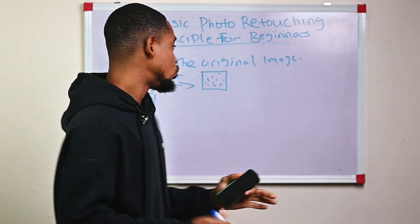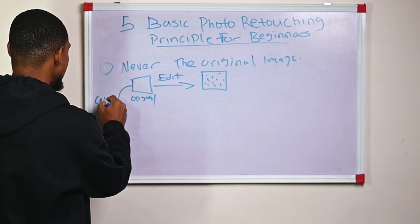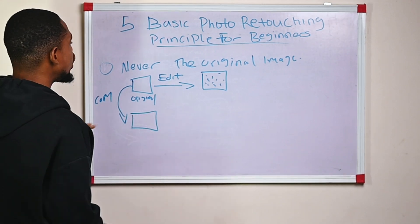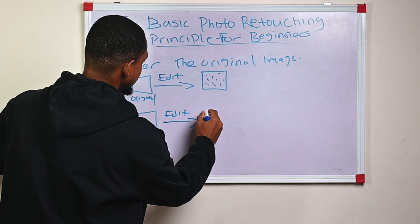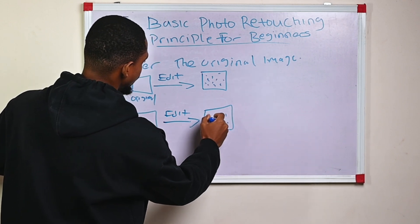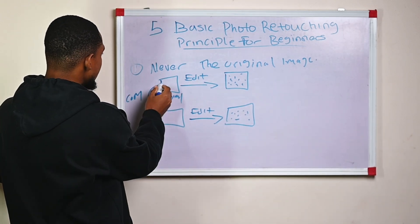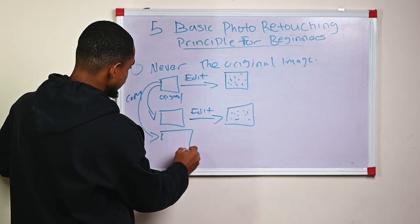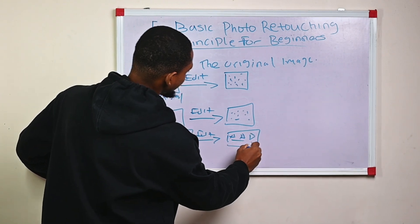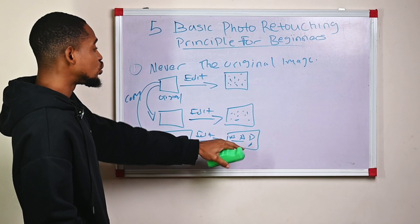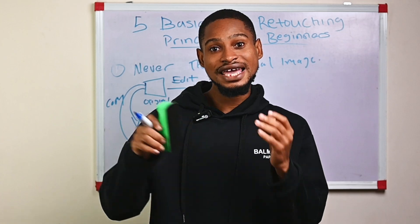What we want to do is make a copy of the original image. Instead of editing the original, we're just going to edit the copy. If we want to change the style of the edit, since we still have the original image, we can just make another copy and edit it to the new style we want. That's why software like Capture One and Lightroom automatically duplicates our original image so that we can edit the copy.